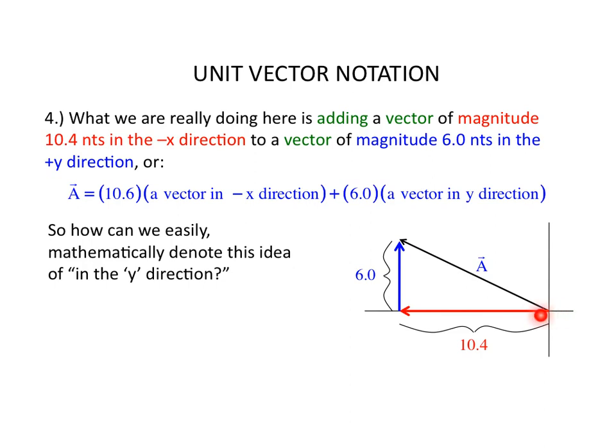What you're doing is you are taking a vector in the minus x direction, whose magnitude is 10.4, and you're adding it to a vector in the plus y direction, whose magnitude is 6. And that graphical vector addition is going to end up giving you vector A.